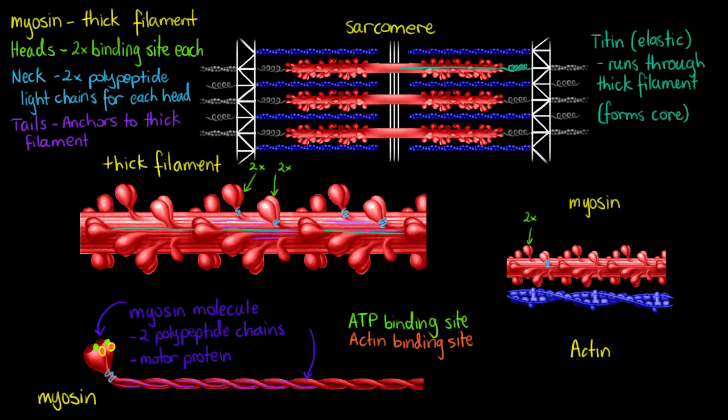So we know all there is to know about our thick filaments now. We know it is comprised of many individual myosin proteins all linked together, and we know about each binding site within the myosin. In the next video we will discuss actin in the same way before we move on to contraction and how myosin and actin interact together. I hope this video has been helpful to you — thanks for watching and I'll see you all again soon.